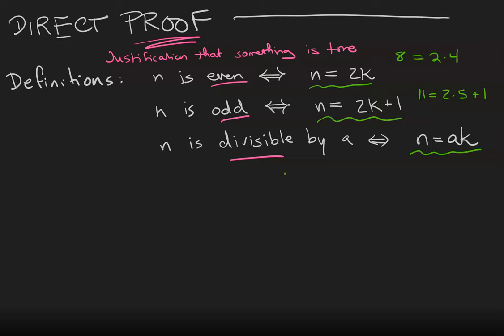For example, 33 is divisible by 3. We would write that as 3 divides 33 because 33 can be written as 3 times 11. So this is notation for saying that a divides n.